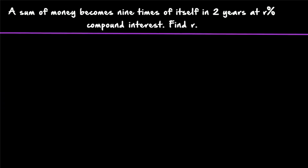Hi friends, welcome to today's class. Today's question is: a sum of money becomes 9 times of itself in 2 years at R percentage compound interest. Find R. It is given that amount is equal to 9P, where P is the principal — the sum given — and the amount becomes 9P at a time period of 2 years. We have to find out what is the rate of interest R.